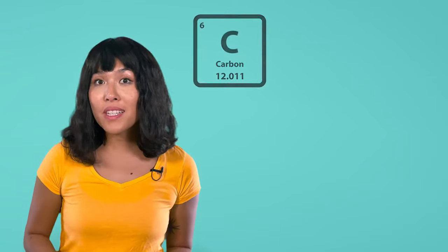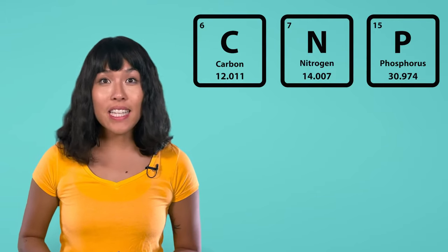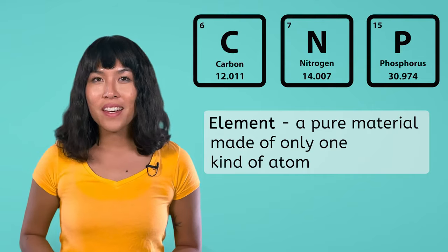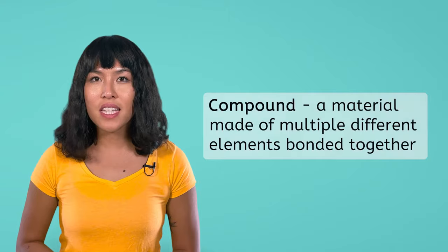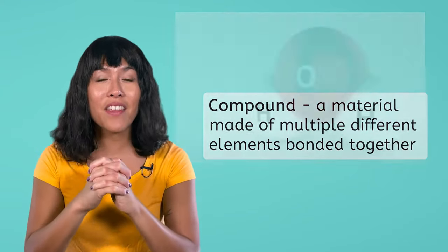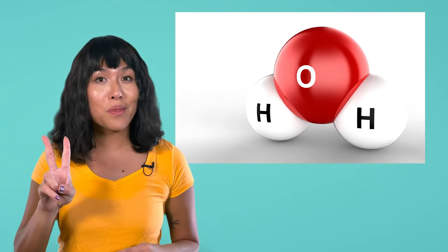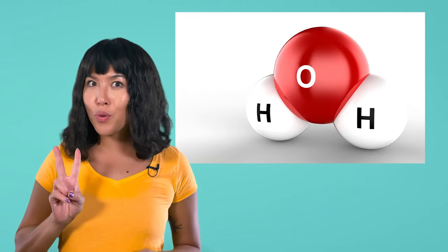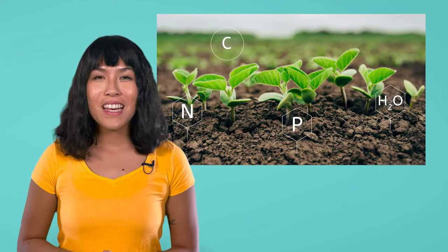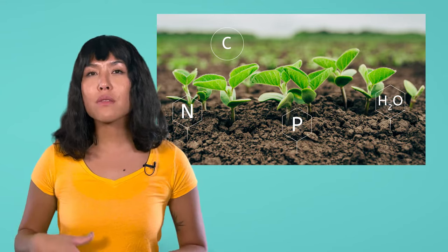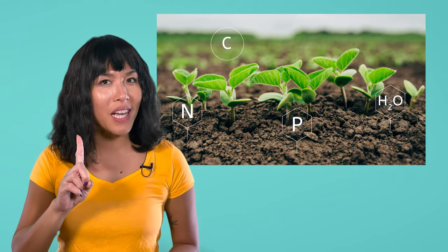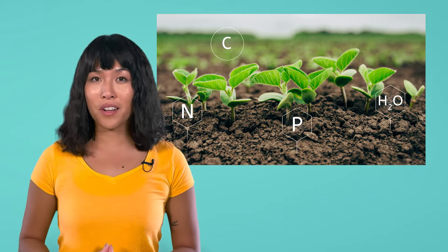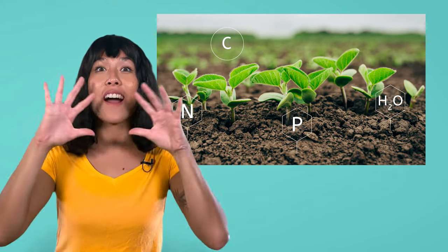First, let's take a look at what carbon, nitrogen, and phosphorus really are. These materials are all examples of elements, meaning they're a pure material made of only one kind of atom. On the other hand, water is a compound, meaning it's made of multiple different kinds of elements bonded together. In the case of water, it's made of two atoms of the element hydrogen and one atom of the element oxygen — that's what H2O stands for.